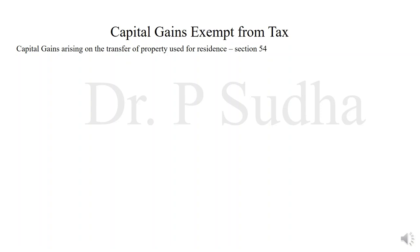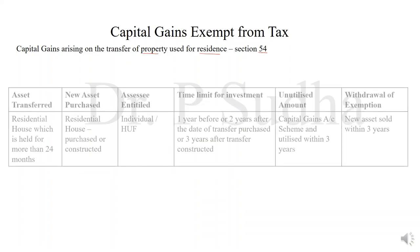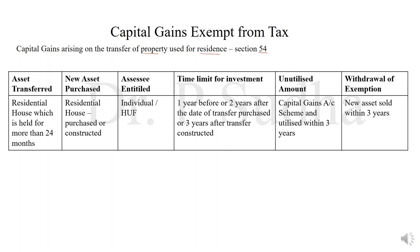The first section that we are going to see is section 54. As per this section, if an individual or an assessee is transferring a property that he is using for his residence — transferring means selling. If he is selling a property which he is using for residence, then the capital gain arising out of that transfer will be exempted, provided he satisfies the following condition.